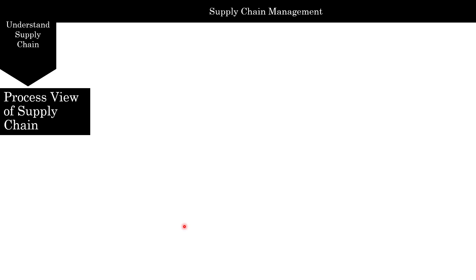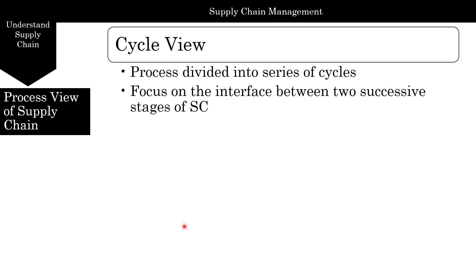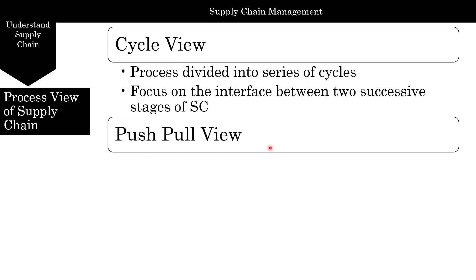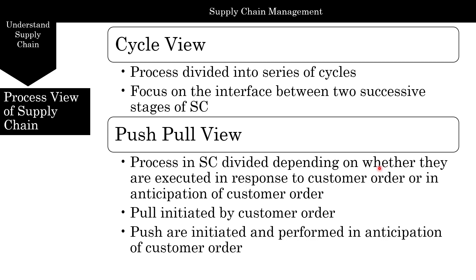There are two different ways you can look at a supply chain. The first is the cycle view, where the process is divided into a series of cycles and we pay attention to the interface between two different stages. The second is the push-pull view, where processes are divided depending on whether they are executed in response to a customer order (pull) or in anticipation of a customer order (push). With more of a push, you have more uncertainty, whereas with pull you already have the customer order and there's less uncertainty.